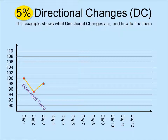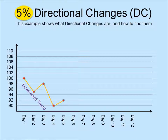Suppose the price drops to 90 on day 4. We record 90 as the lowest price in the current trend. Suppose the price goes up to 92 on day 5. It is only 2% above 90, which is less than 5%, so we still consider ourselves to be in a downward trend.